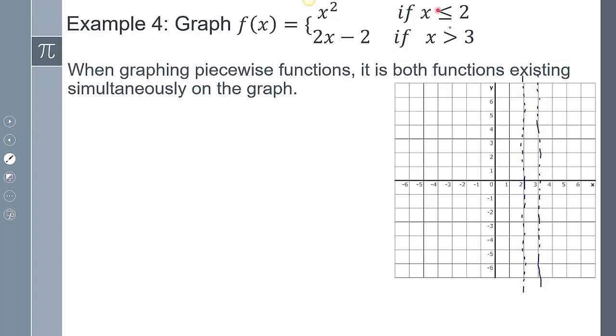This domain, x is less than or equal to 2. So I want to pick values that are less than or equal to 2: 2, 1, 0, negative 1. Plug those in. I get these values for my y.